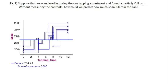Example two says: suppose we wandered in during the can-tapping experiment and found a partially full can. Without measuring the contents, how could we predict how much soda is left in the can? You can't measure it, you can't weigh it, you just find this partially full can. What would you predict to be the amount of soda left? If you thought about it long enough, your best guess would probably just be to guess the average.